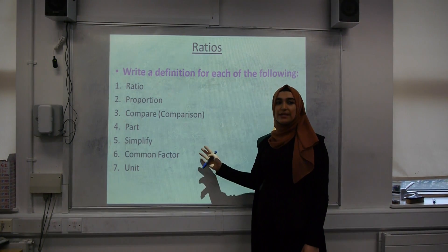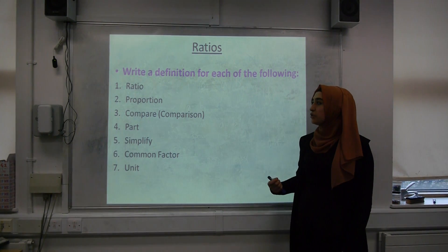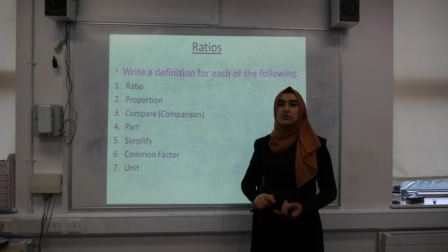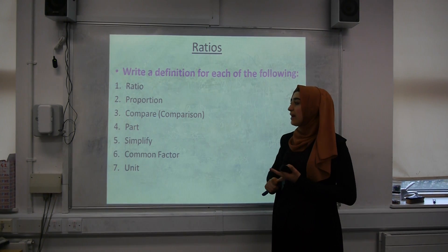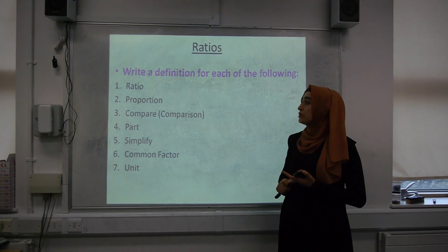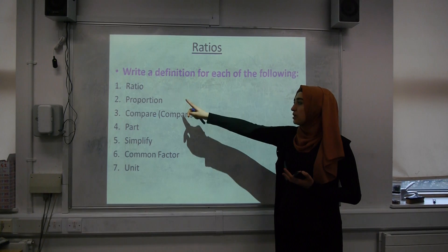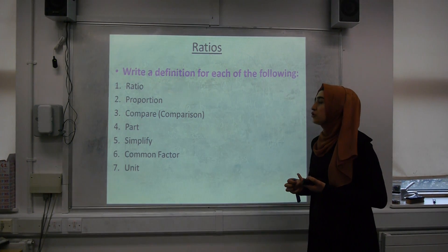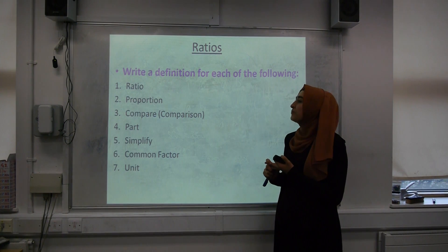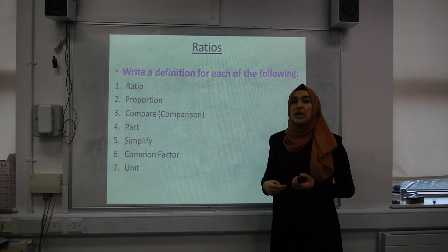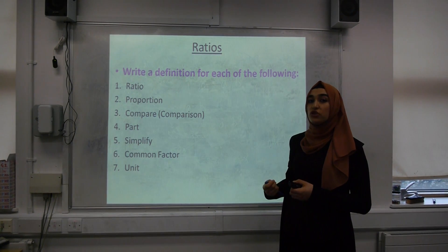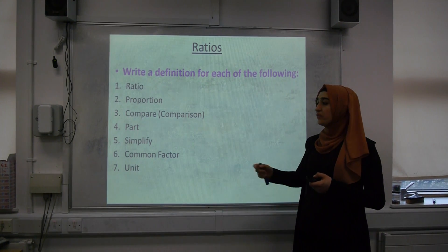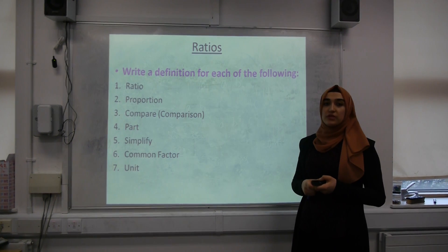We're going to start off by defining the keywords related to this topic. What I want you to do is pause this video, write down these keywords and define them using your own words. If you don't know the meaning, that's okay — you can use the internet or books to find definitions, but rephrase them in your own words and write them down in your book. You can use highlighters to highlight the words but not the definitions. Note that these words can appear outside the context of mathematics, so find a definition related to our topic of ratios. Pause now, write these down, find your own definitions, then move on to the next activity.